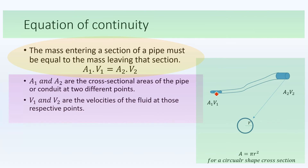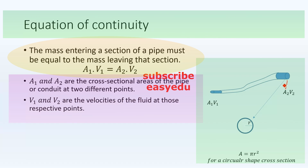The total mass inside the pipe remains constant, so A1V1 = A2V2 = constant. For example, if the cross-sectional area A1 at the inlet is smaller than A2, then V1 will be greater than V2. But if A1 is greater than A2, then the velocity at the outlet V2 will be greater than the velocity at the inlet.